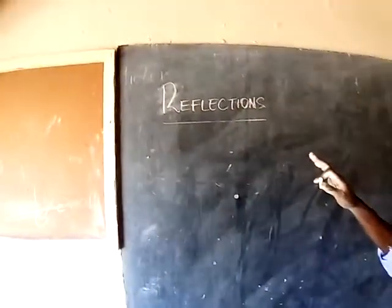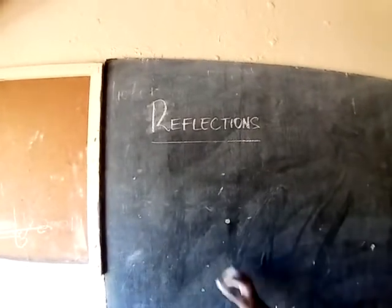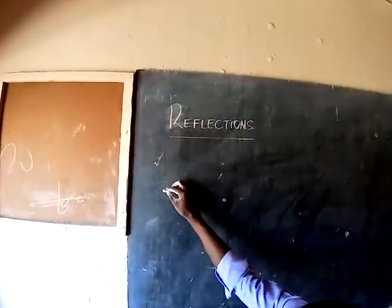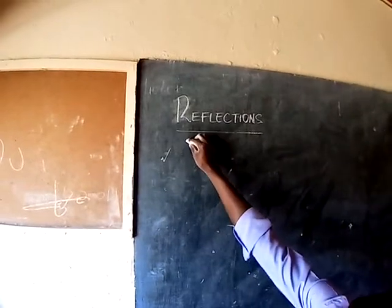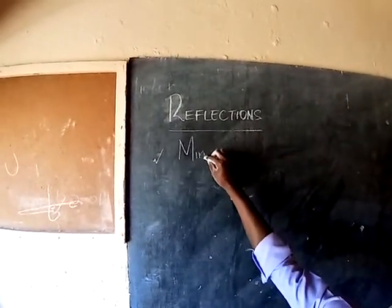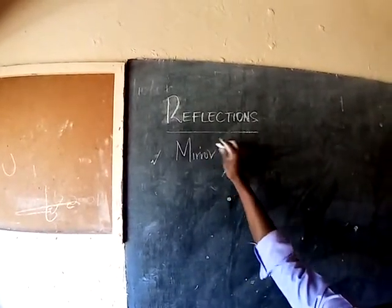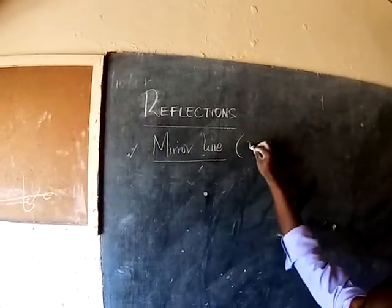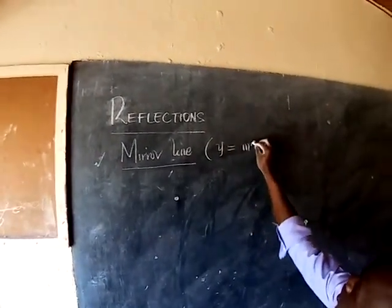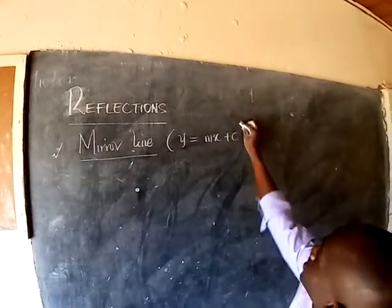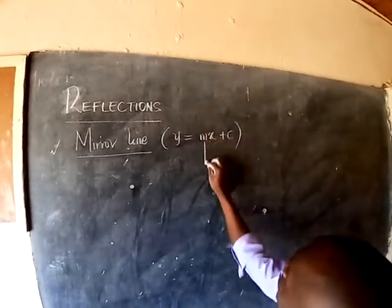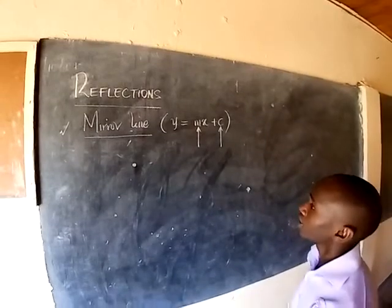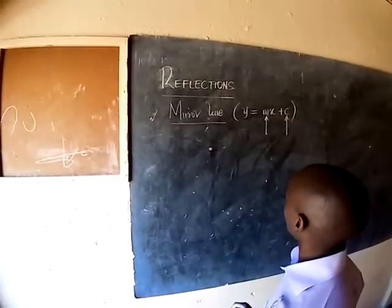Any reflection under transformations occurs only when we have a mirror line. The terminology is a mirror line, and this mirror line is always of the form y equal to mx plus c, with a gradient m and intercept c. It's any straight line.